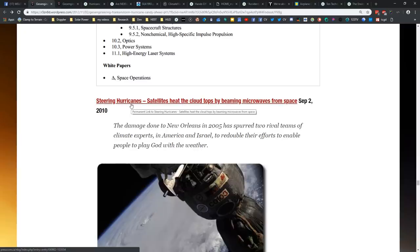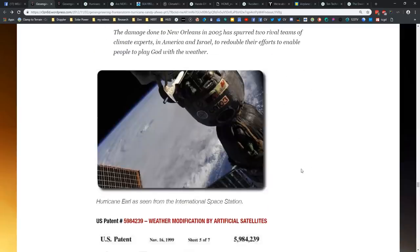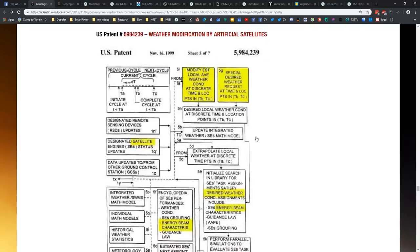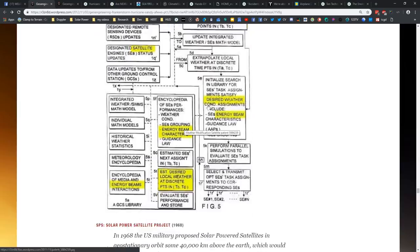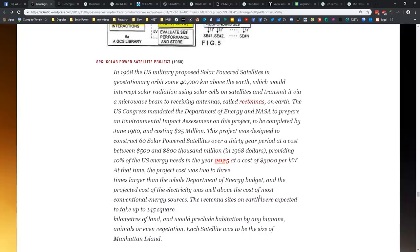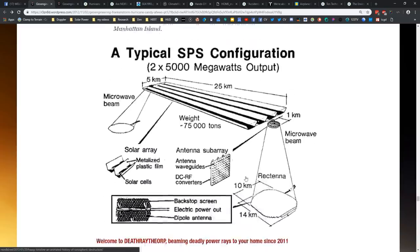Then I came across this article from 2010, steering hurricanes, satellites heat the cloud tops by beaming microwaves from space. The damage done to New Orleans in 2005 has spurred two rival teams of climate experts in America and Israel to redouble their efforts to enable people to play God with the weather. And I have this patent here, weather modification by artificial satellites, which backs that whole thing up. Really, the gist of what I've got here on just the very first part is that if you're talking about steering a hurricane, the kind of power required, NEXRADs generally speaking don't have that. But solar-powered satellites do.